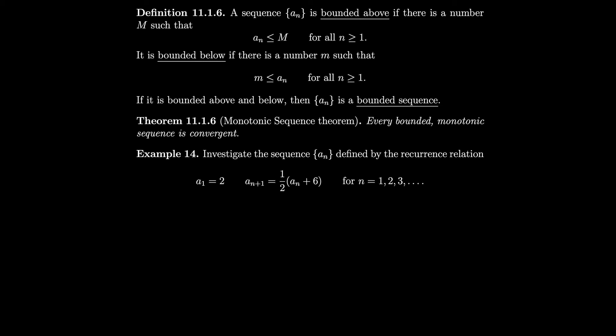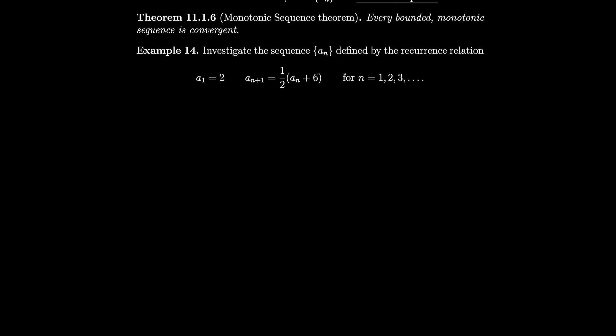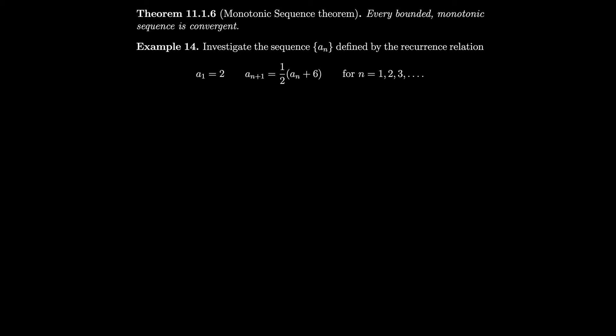Let's investigate the sequence defined by the recurrence relation a1 = 2 and an+1 = (1/2)an + 6. We're not given an explicit formula — we must compute each term from the previous one. We can't take the limit directly since we don't know an in advance, so instead we'll use the Monotonic Sequence Theorem by showing the sequence is bounded and monotonic.